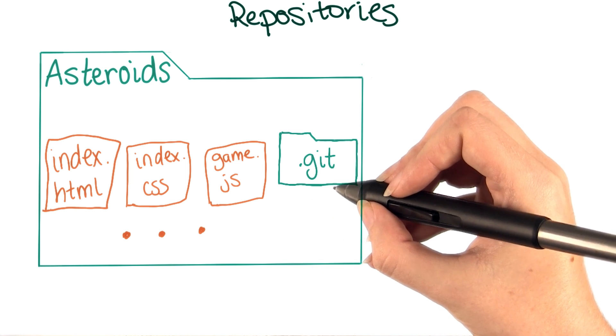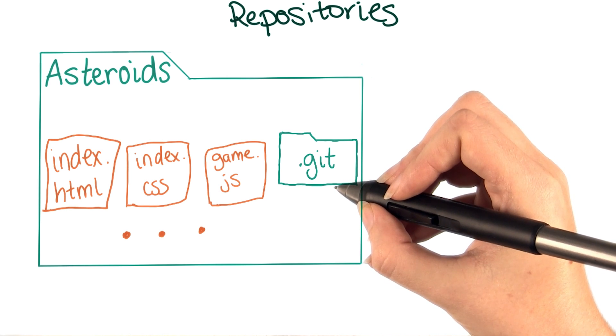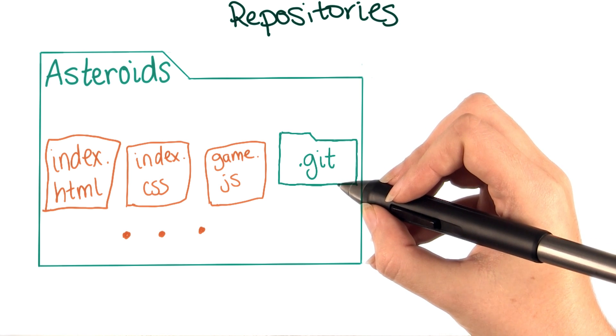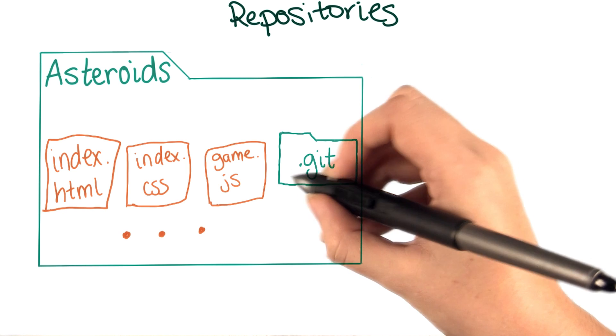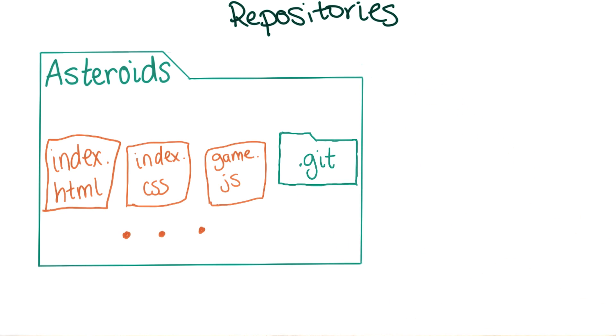Hidden files and directories are often used for data that the user doesn't need to directly interact with. These directories and files are only different from normal ones in that they start with a period, which tells the operating system to hide it from the users.